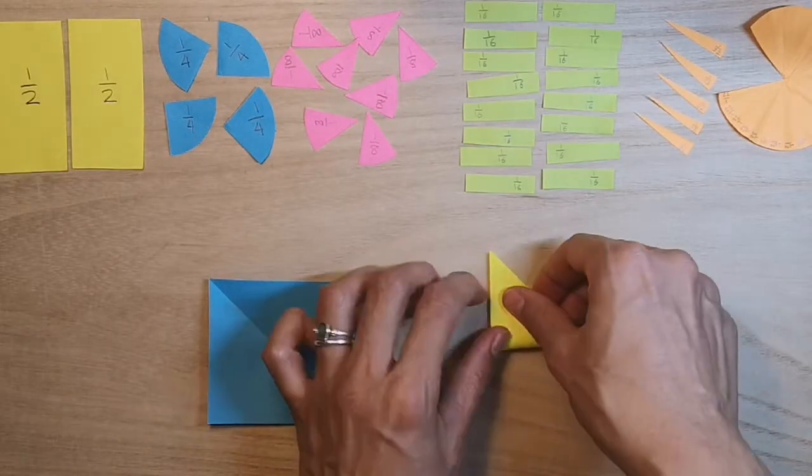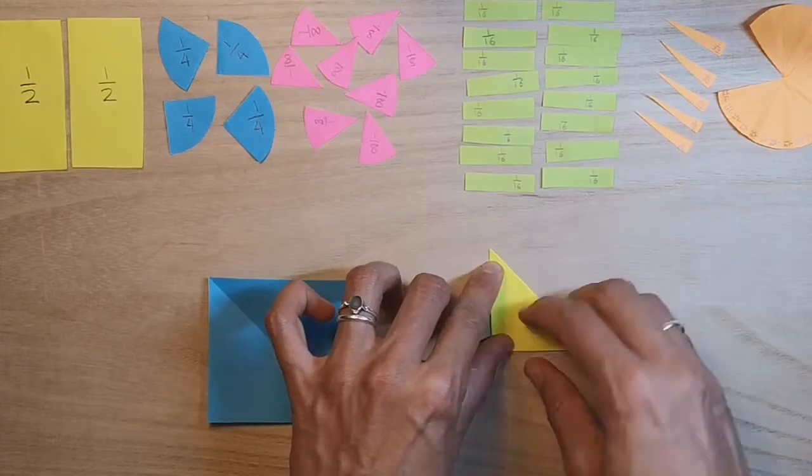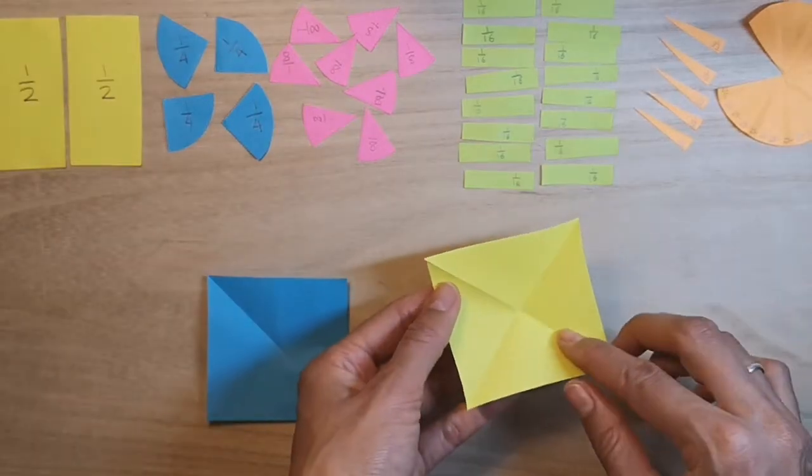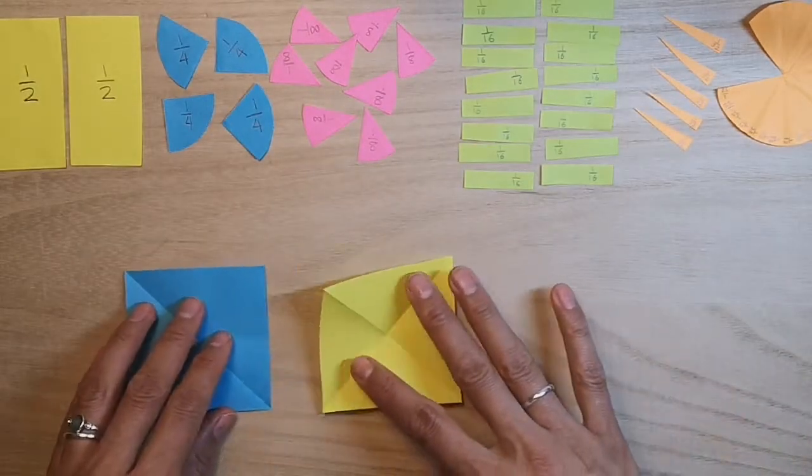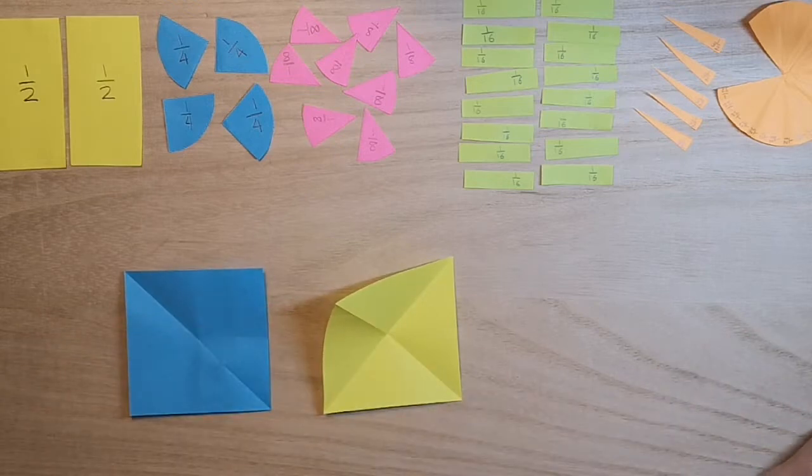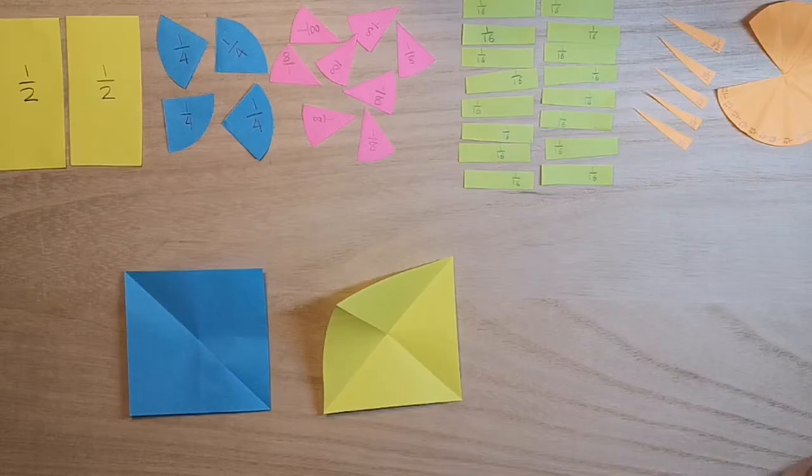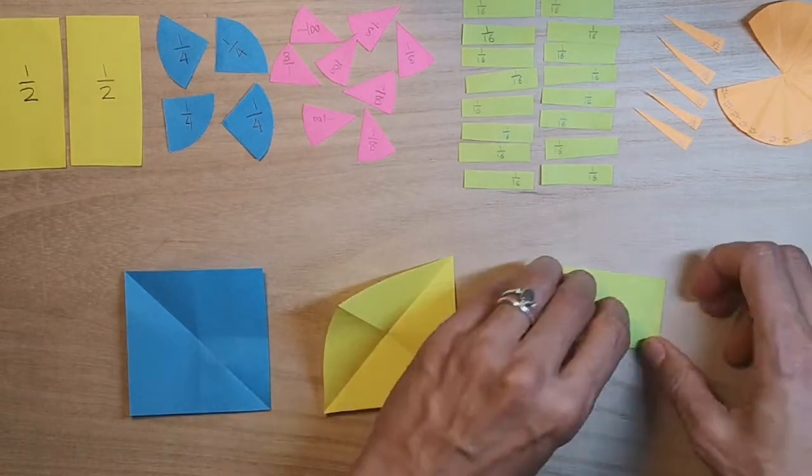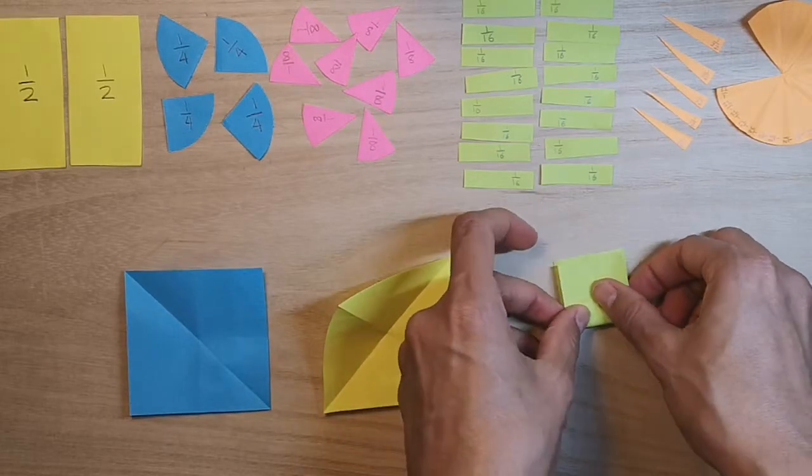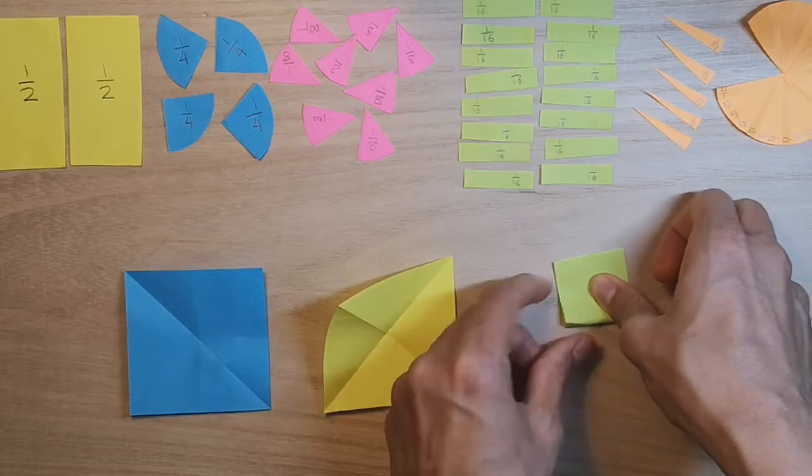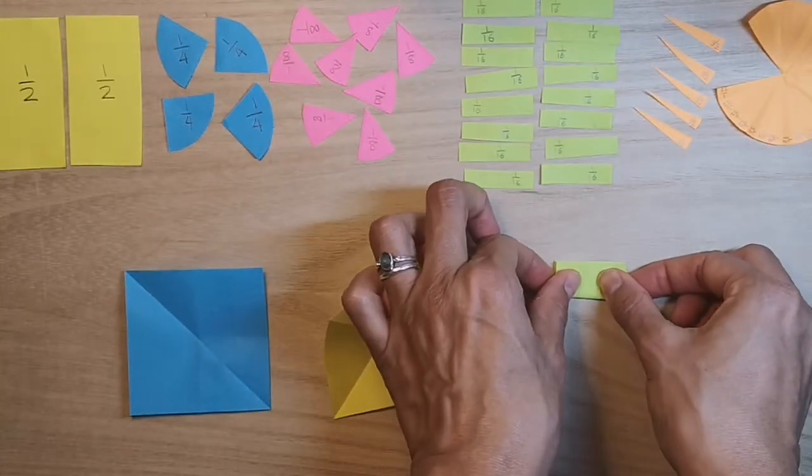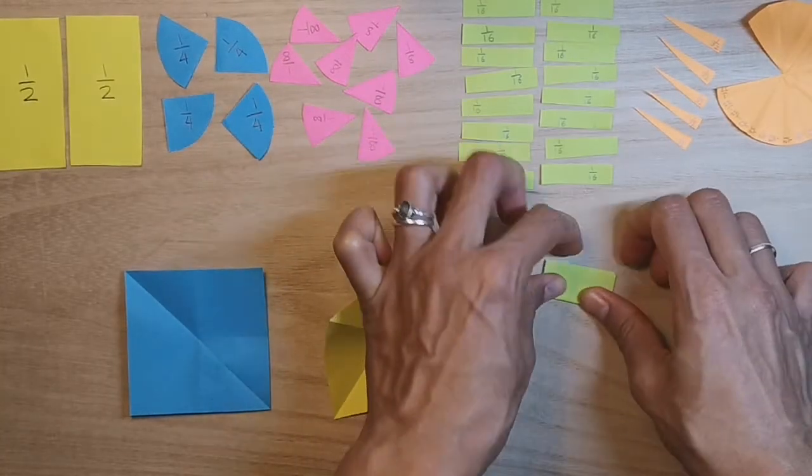So I've folded it in half. I'm going to fold it in half again. And now I have triangular quarters. And I might also do that for eighths. With maybe, what color should I use? Maybe green. Fold it in half. Fold it in half again, which will give me quarters. And fold it in half again, which should give me eighths.